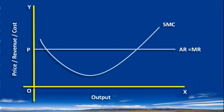SMC is the short run marginal cost curve. SMC is equal to marginal revenue at point E. At this point, the marginal cost curve cuts the marginal revenue curve from below. Hence, E is the point of short run equilibrium of the firm.